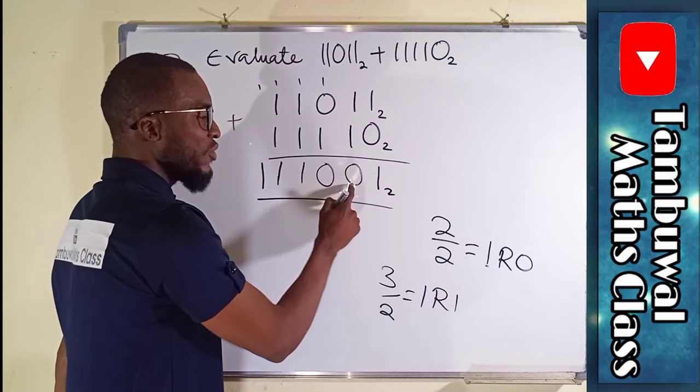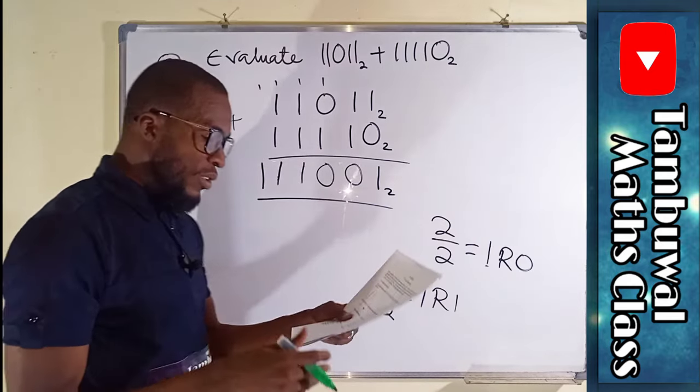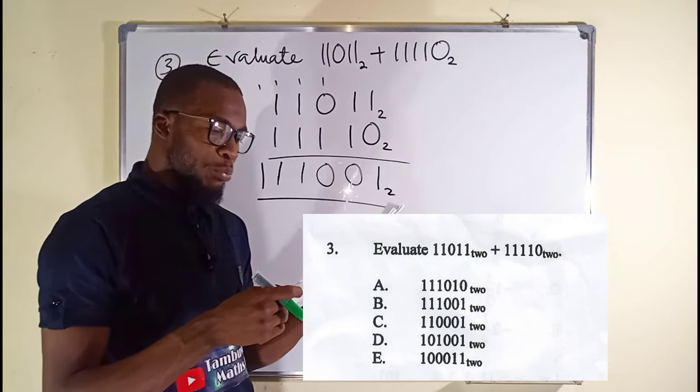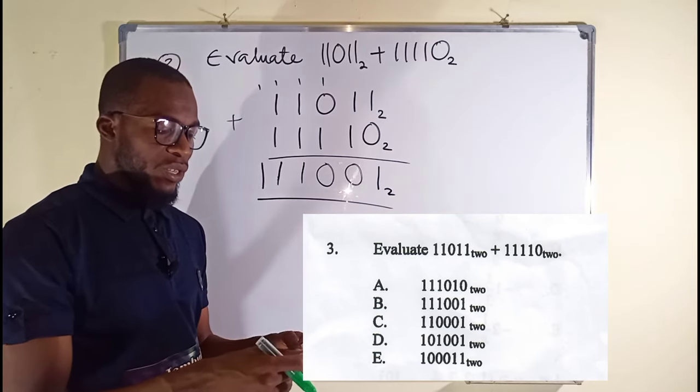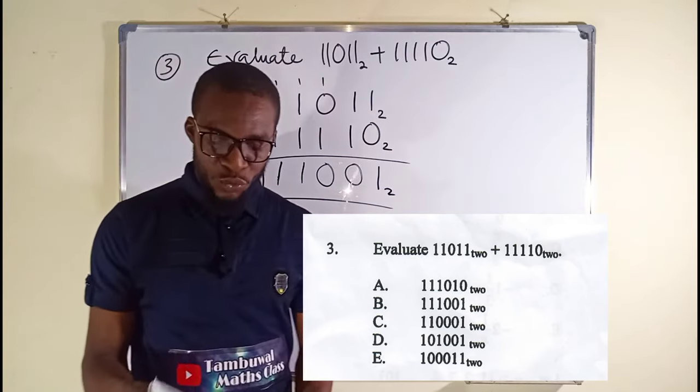1, 1, 1, 0, 0, 1 in base two, which is the option, option B, question number three. So now let us look on to question number four.